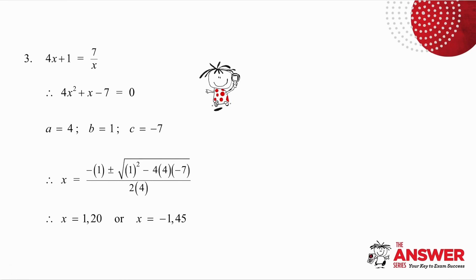In the third example the first thing I do is I get rid of the fraction. So I multiply by the common denominator which is x. The other thing I do is I take this term across to the other side. So I set up my quadratic equation in standard form.